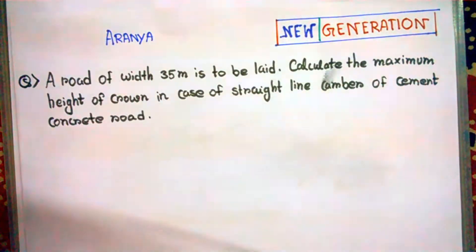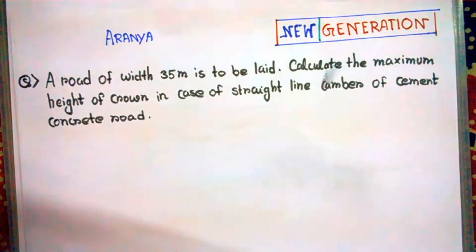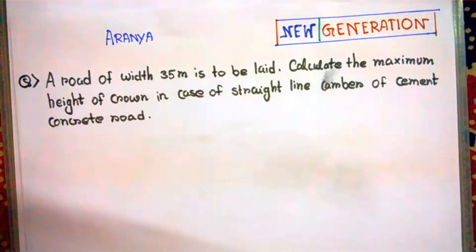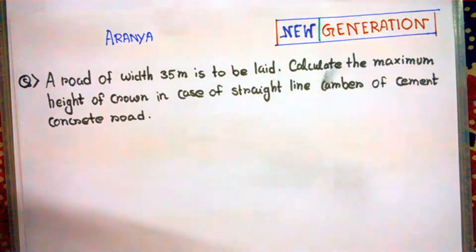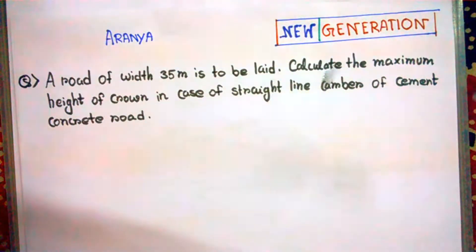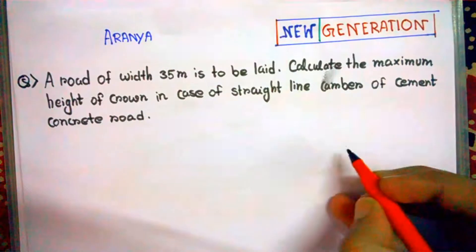Hello friends, welcome to New Generation. Today we will solve a few questions on the previous topic we had discussed in the previous video. In the first question, a road of width 35 meters is to be laid. Calculate the maximum height of the ground in case of straight line camber of cement concrete road. For straight line camber, the image should look like this.